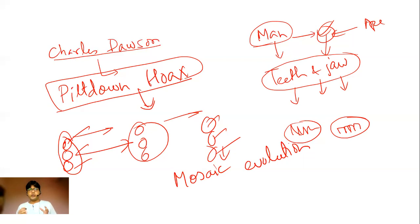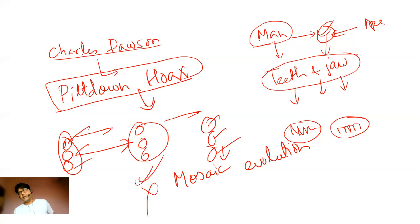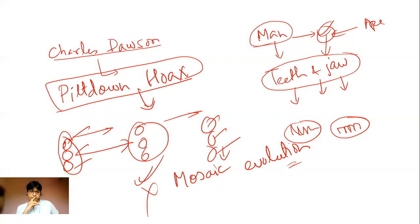So bipedalism developed first, and brain enlargement came later — partly driven by the activities made possible by becoming bipedal. This explains why the Taung Child was bipedal but had a very small brain. Had scholars known about mosaic evolution back then, Raymond Dart would have received proper credit much sooner. Australopithecus, especially the Taung Child, is one clear example of mosaic evolution.